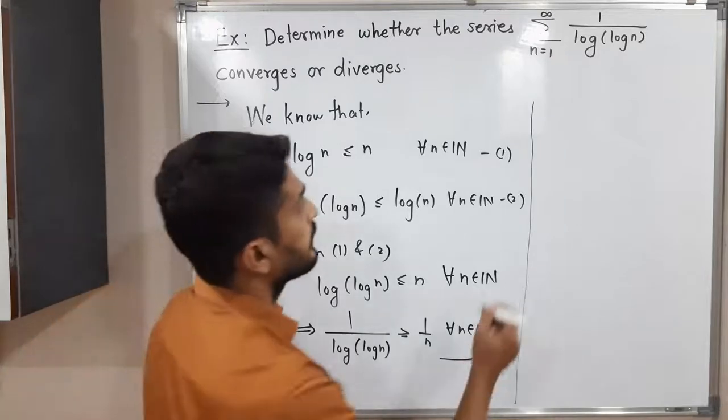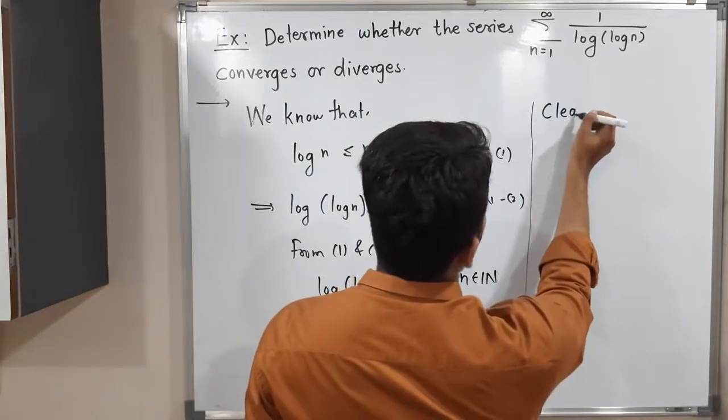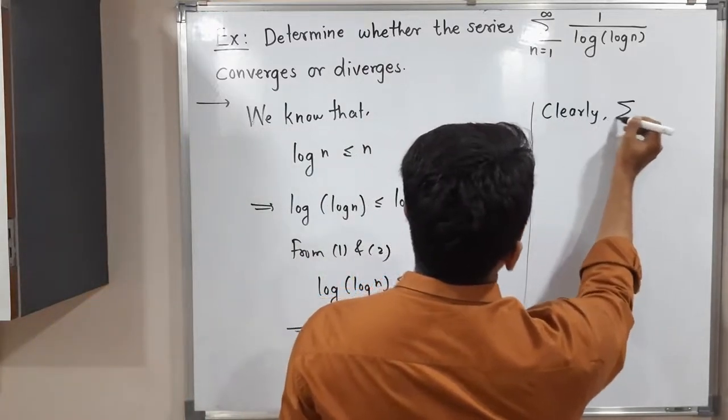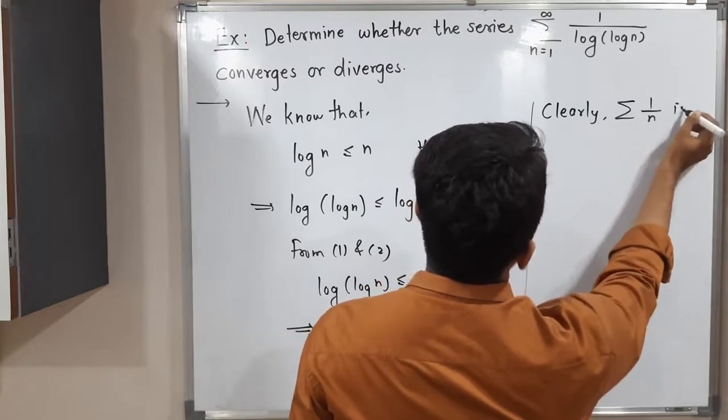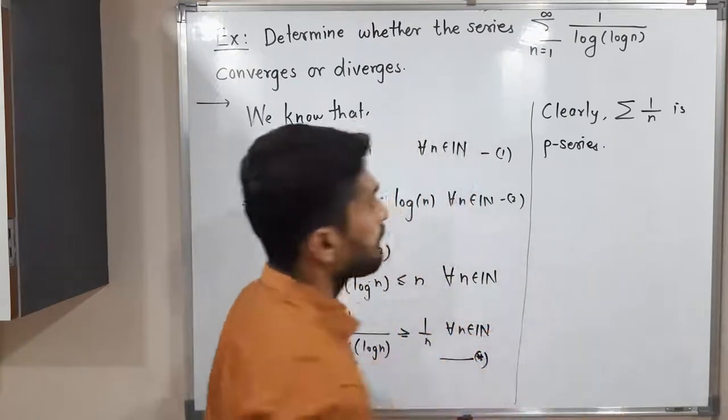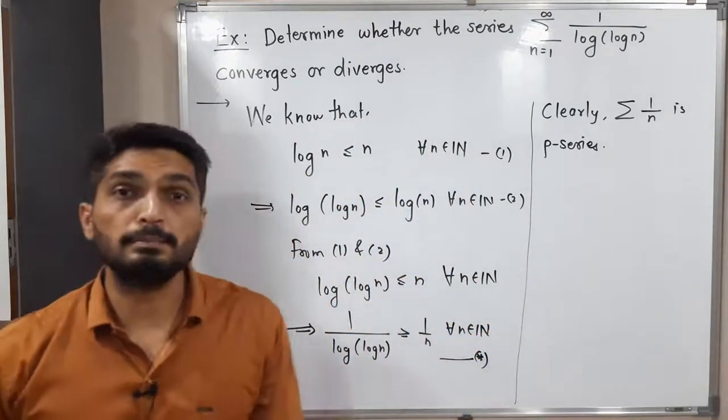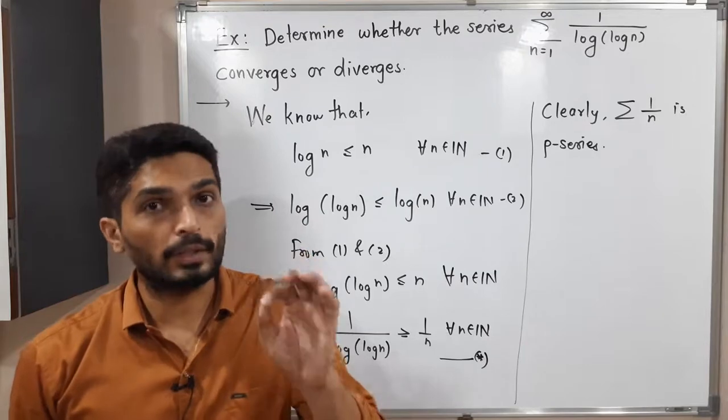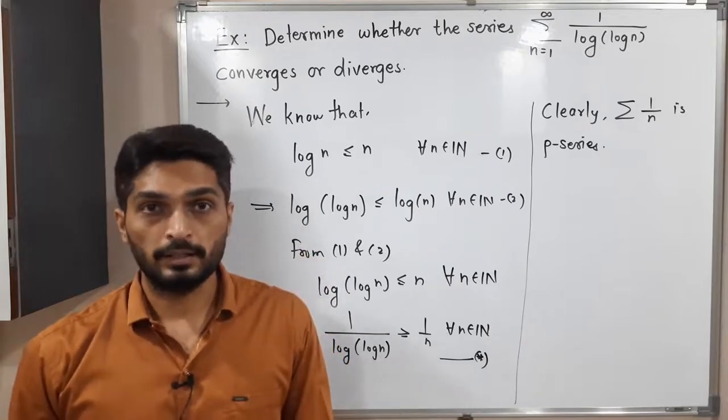Clearly, summation 1 upon n is a p-series. You are familiar with p-series? A p-series means a series which is in the form summation 1 upon n raised to p. This is in the same form but p is equal to 1 here.